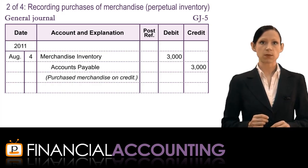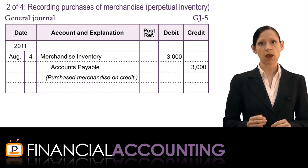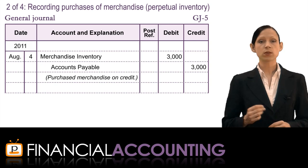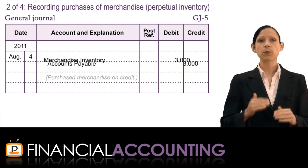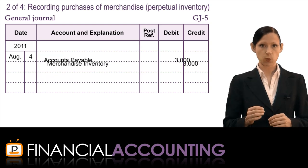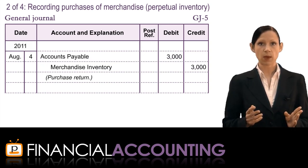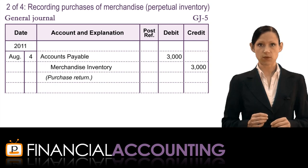Sometimes when we purchase items, we may need to return them to the supplier — perhaps because we received the wrong colour or the goods arrived damaged. The way we record this is simply to flip the purchase journal entry: we debit either cash or accounts payable, and credit merchandise inventory.